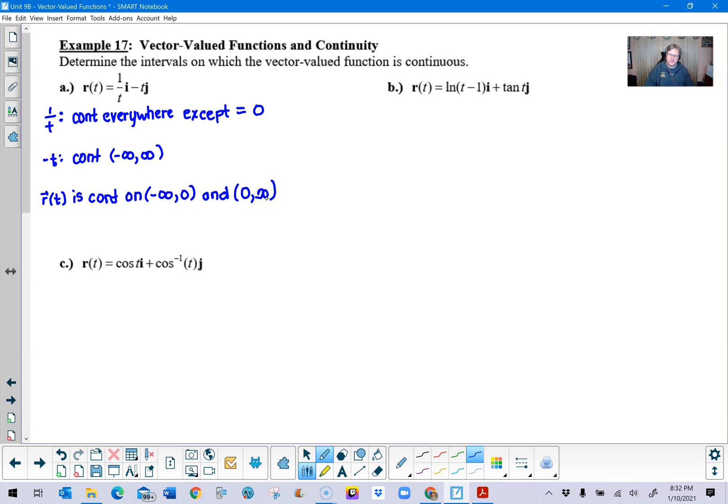All right, same thing for part b. In part b we're going to deal with the first component, the natural log of quantity t minus one. Now if we recall, the natural log has some issues when t minus one, or when the value that you're taking the log of, is a zero or a negative number. So we want to make sure that t minus one is going to be positive, which basically says that t has to be bigger than one.